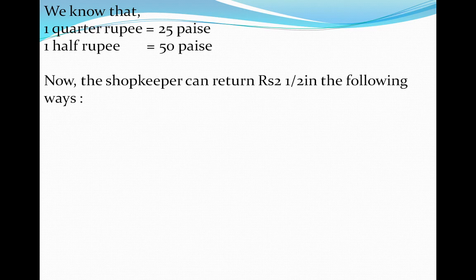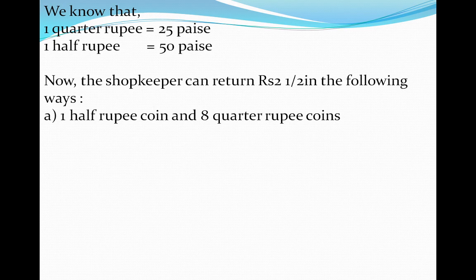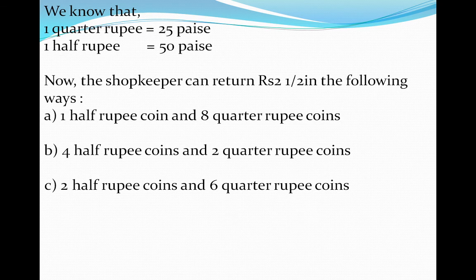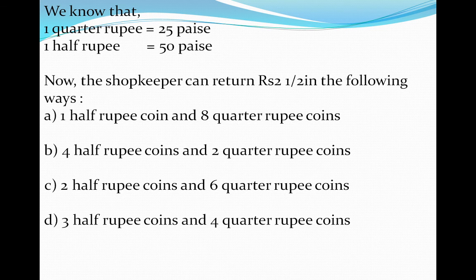Now the shopkeeper can return Rs. 2 and a half in the following ways. First: 1 half rupee coin and 8 quarter rupee coins. Second: 4 half rupee coins and 2 quarter rupee coins. Third: 2 half rupee coins and 6 quarter rupee coins. And option D: 3 and a half rupee coins. Dear students, you have to calculate how the shopkeeper can return 2 and a half rupees to Latha in each of these ways. This is your today's homework.